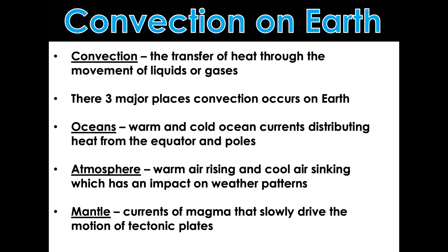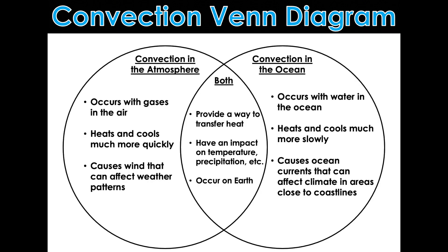So, in the ocean, warm and cold ocean currents distribute heat from the equator to the poles. In the atmosphere, warm air rises and cool air sinks, which has an impact on weather patterns. And we're going to learn all about the pressure systems.